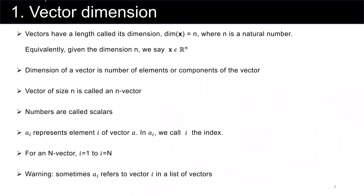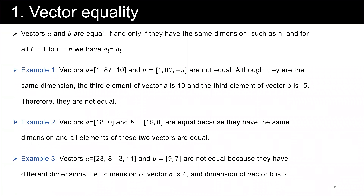Next, vector equality. Vectors a and b are equal if and only if they have the same dimension n, and for all i from 1 to n, a sub i is equal to b sub i. This is a two-directional statement: if vectors are equal, they have the same dimension and all corresponding elements are equal; and conversely, if all those conditions hold, the vectors are equal.